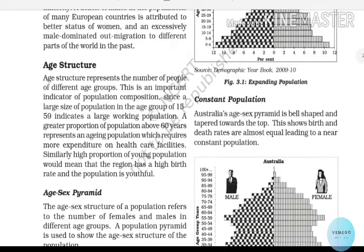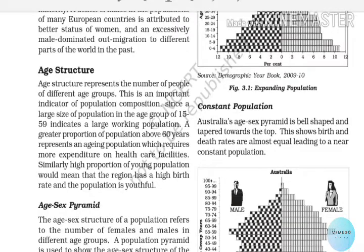Let's go to the next topic: the Age Structure. The age structure is a population composition factor, one of the factors that comes from the sex ratio. The age structure covers 15 to 50, the working population age group. There are economic, social, and development factors involved.